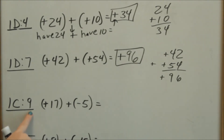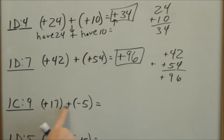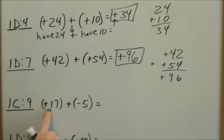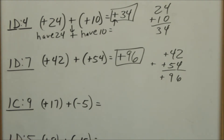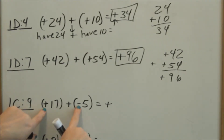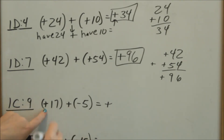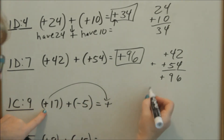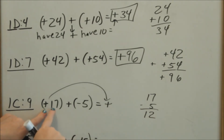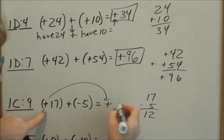Go to page C, look at number 9. Here you have 17 — positive means you have. Then you're adding, but this has a negative number, which means you owe. So you have $17 and then you owe $5. In the end you're still going to have money. When your signs are different, you subtract the numbers, and the sign of the larger number is your answer sign. 17 minus 5 is 12, so you still have $12.